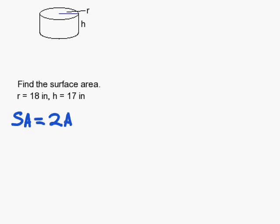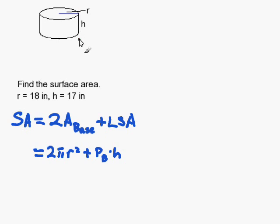So in this case, the surface area is 2 times the area of the base, which is the top and bottom, plus the lateral surface area going around the sides. This gives us 2 times pi r squared plus the perimeter of the base times the height. That is how you calculate the lateral surface area, which is basically the circumference of the base times the height.